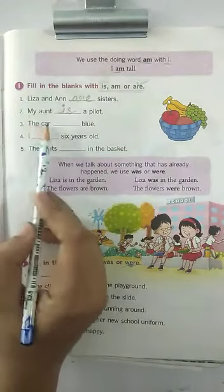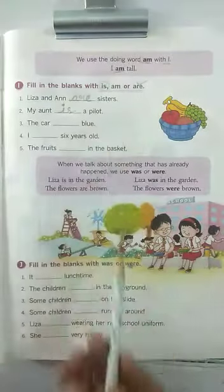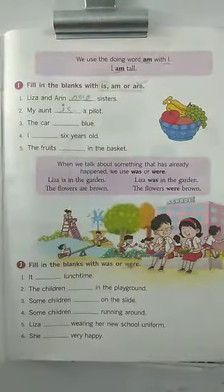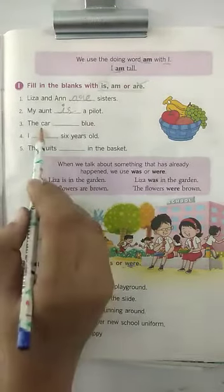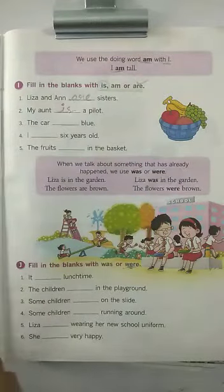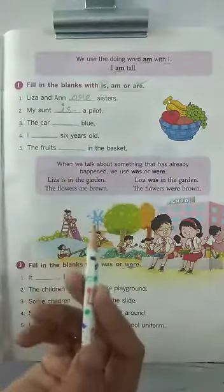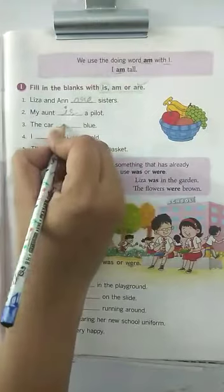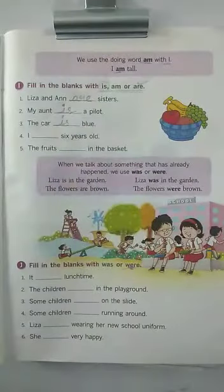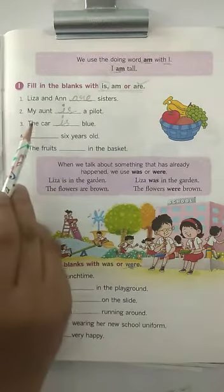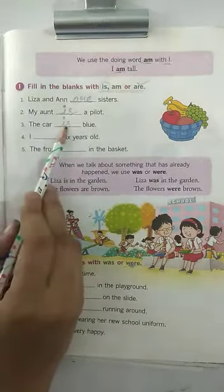Next: 'The car ___ blue.' Read it again: 'The car ___ blue.' Children, we are talking about one car or many cars? Yes, just one car. So in the blank you will write 'is'. Write 'is' here, children. I-S. Read the sentence again: 'The car is blue.'